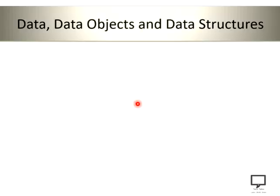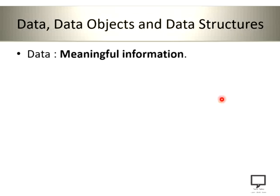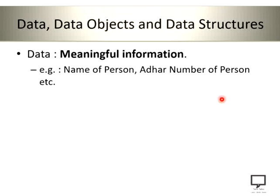Let's start with the concepts of data, data objects, and data structures, because they are important before moving to abstract data types. What do you mean by data? Data is nothing but meaningful information. Examples of data are the name of a person, Aadhaar card number of a person, and so on. This is meaningful information about any person.